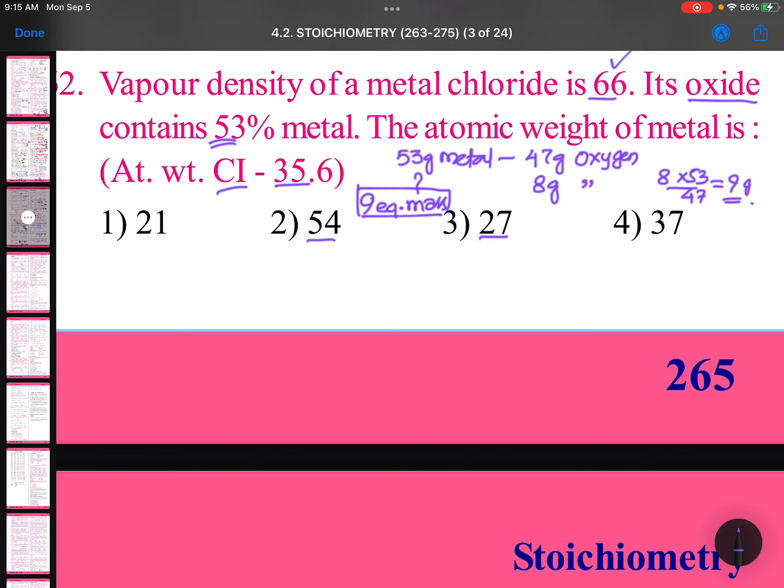Metal chloride vapor density is 66. 2 × vapor density equals molar mass.